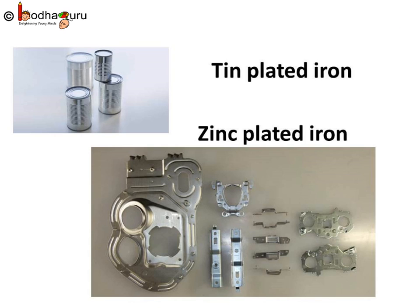You know, tin cans used for storing food are also made by electroplating tin onto iron. Why? Because tin is less reactive than iron. Thus, food does not come into contact with iron and is protected from getting spoilt. Iron is also used for making bridges and automobiles to provide strength, but as we know iron tends to corrode and rust. So, a coating of zinc is deposited on iron to protect it from corrosion and formation of rust.